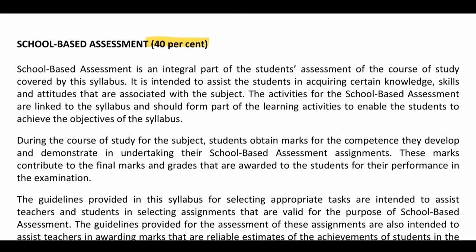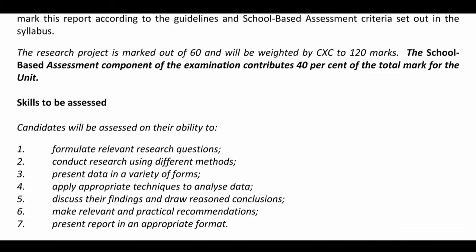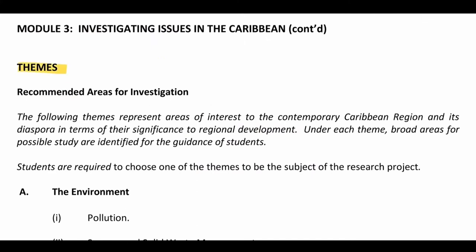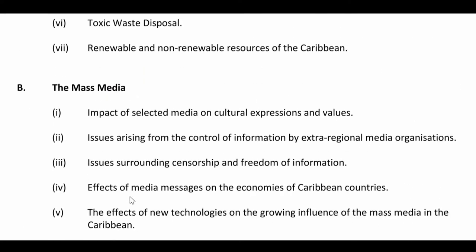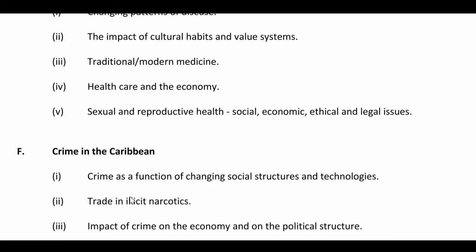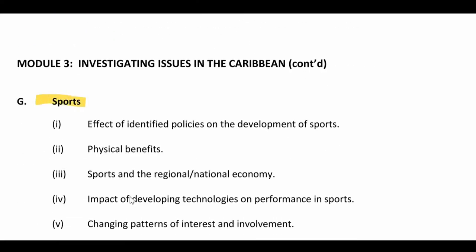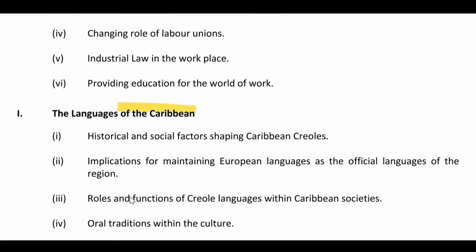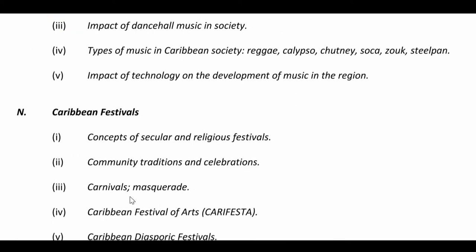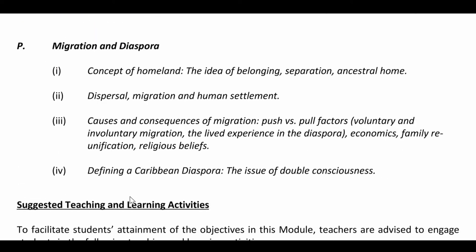The IA is worth 40% of your overall CAPE grade and there are a few requirements you need to adhere to. First and foremost, your theme must be taken from Module 3, and those themes are outlined on pages 24 to 28 in your syllabus. I'll leave a link to your syllabus in the description. Acceptable themes include the environment, mass media, gender issues, the productive sector and development, health, crime in the Caribbean, sports, the workplace, languages in the Caribbean, religion, literary, performing, theater and visual arts, education, music, Caribbean festivals, technology and globalization, and most commonly, migration and diaspora.